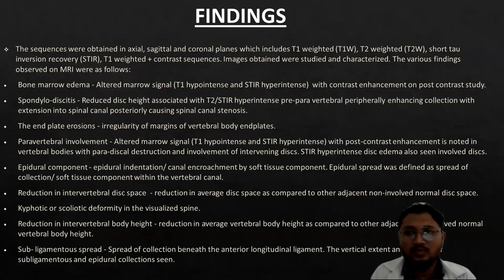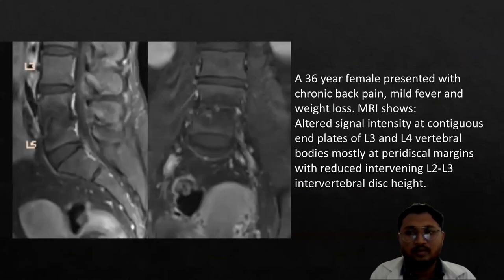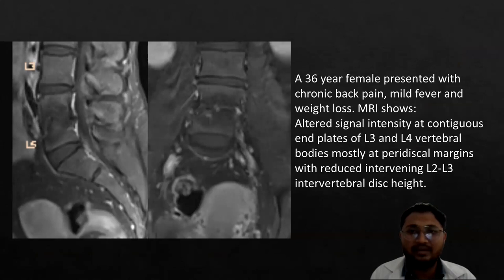I would like to show some images suggestive of various regions involved in Pott's spine. This is an image of a 36-year-old female presented with chronic back pain, mild fever, and weight loss. On MRI, we can see there is altered signal intensity at contiguous end-plates of L3 and L4 vertebral bodies, mostly at the paradiscal margin, with reduced intervening intervertebral disc height.